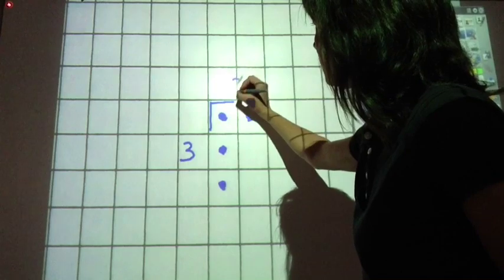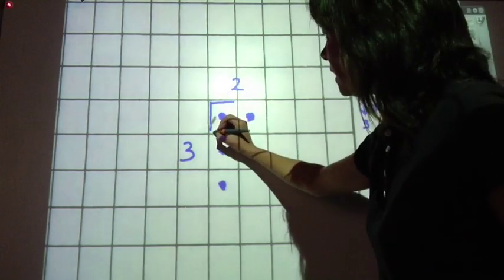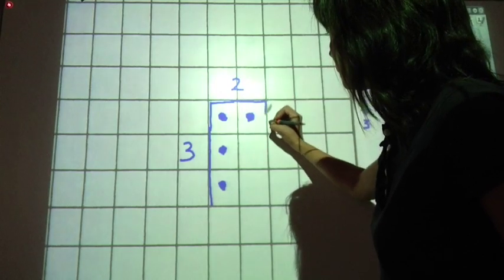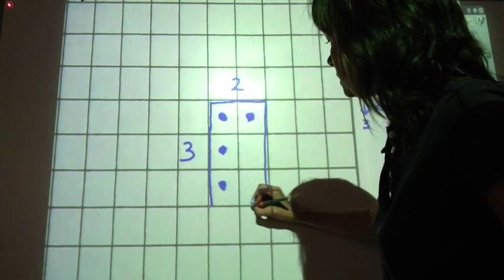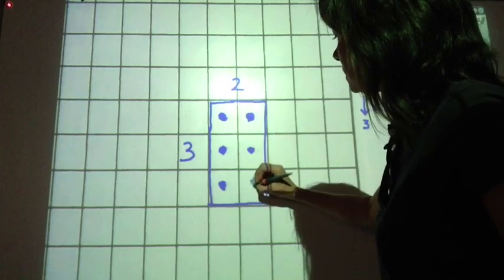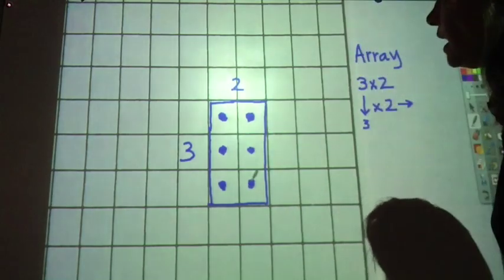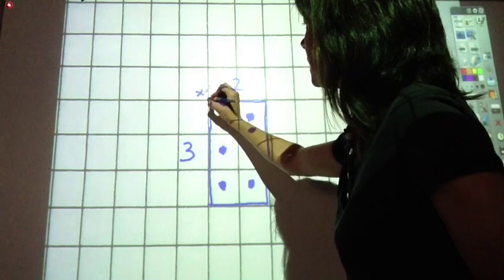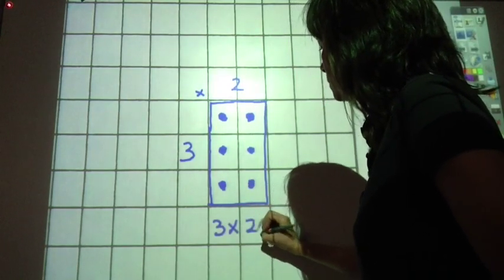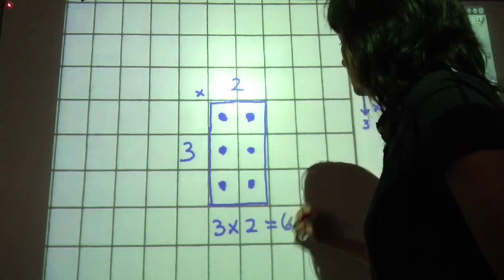3 down, 2 across. Then I would create a rectangle because arrays are in rectangular form. I would fill in my squares and then I would put a little multiplication sign in this corner. 3 times 2 equals 6.